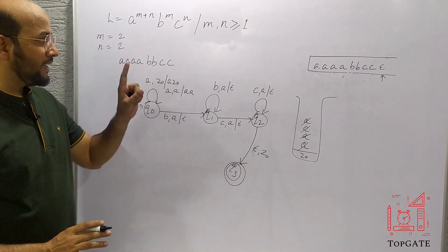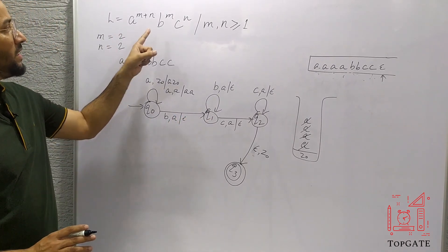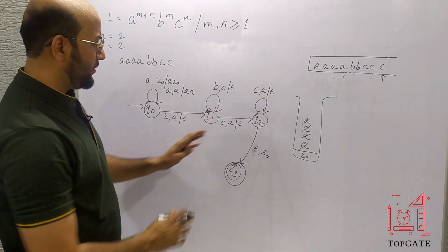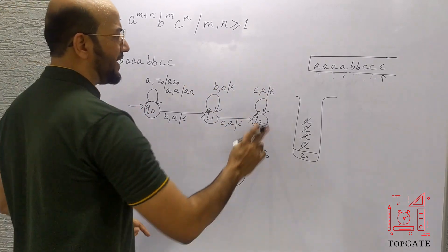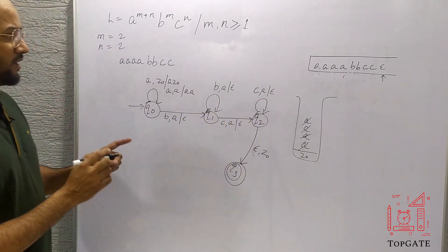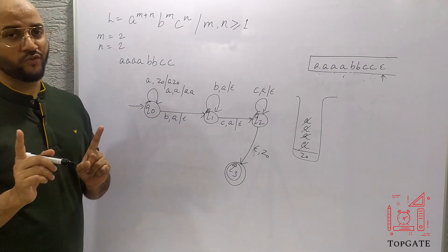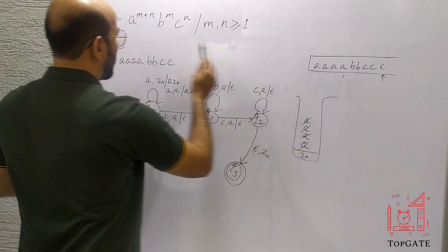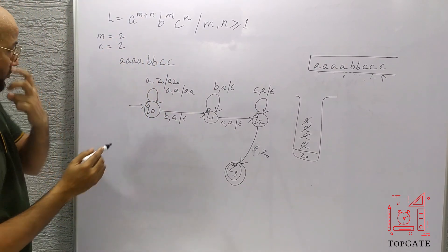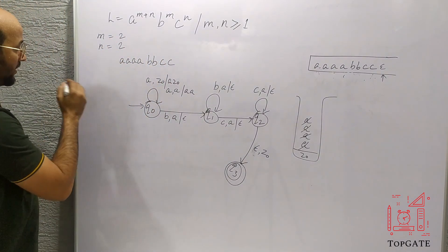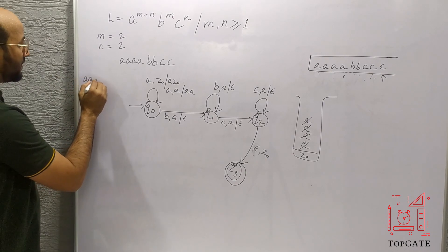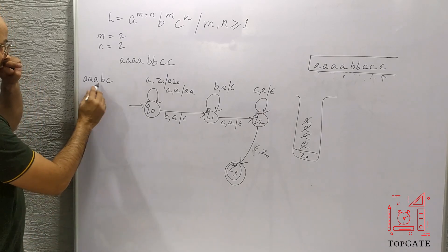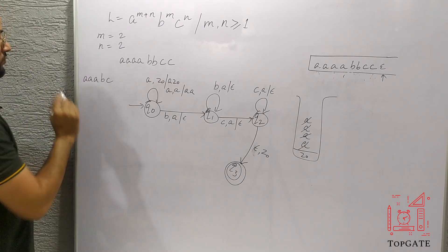This PDA correctly accepts the language a^(m+n) b^m c^n. Now let's test an incorrect string to verify rejection. I'll take the string a a a b c — three a's, one b, one c. This string should not be accepted by this PDA.